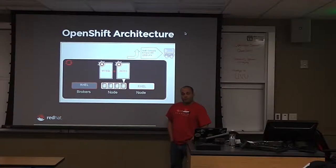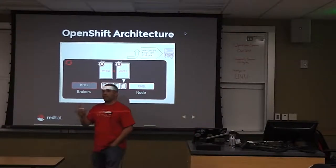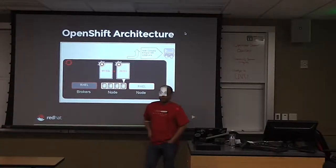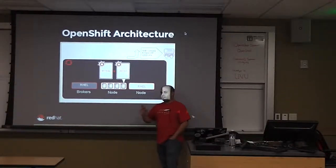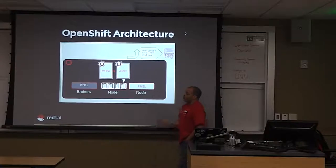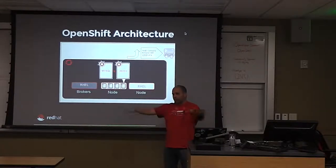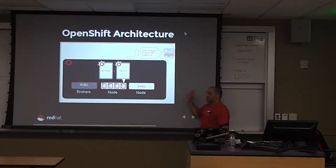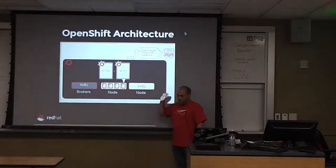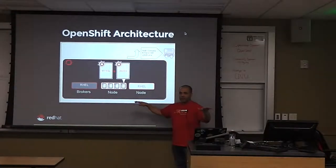We don't have scaling at the database tier yet — we'll have it by end of year, specifically with Mongo. With SQL databases you have to set up replication, which is very intensive. With Mongo it's like one command and the database starts replicating and sharding itself. Your scaling strategy also depends on what you're trying to do — I don't want my bank horizontally scaling with a NoSQL database.